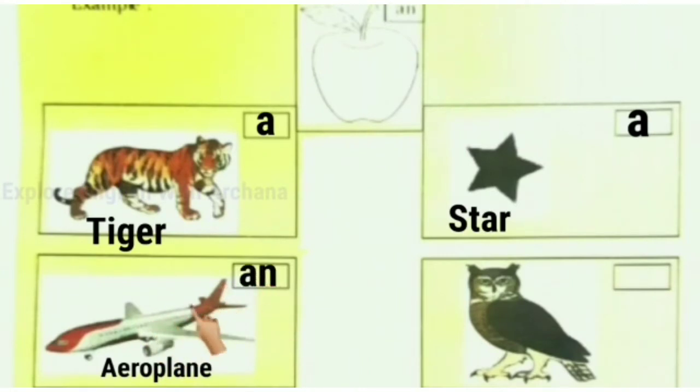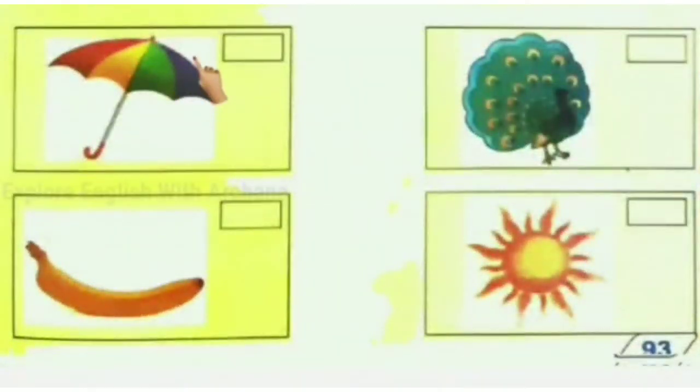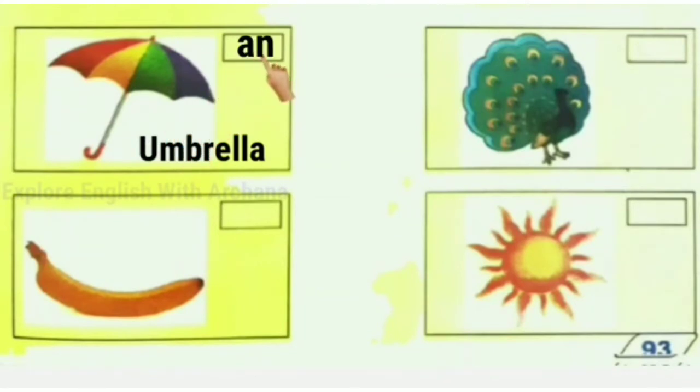Aeroplane - A is a vowel, so we write 'an'. This is a picture of an owl. Owl starts with O, which is a vowel, so we write 'an'. Umbrella - 'an'. And the sun, peacock.